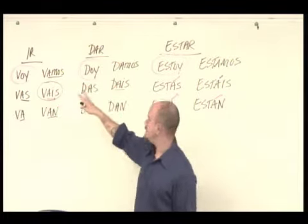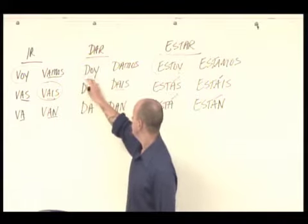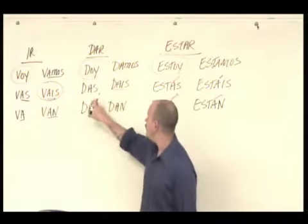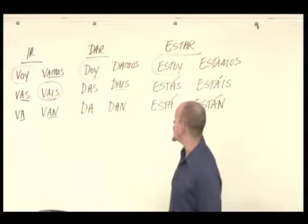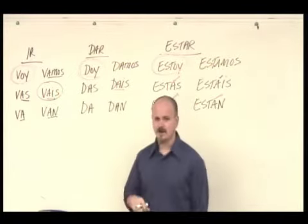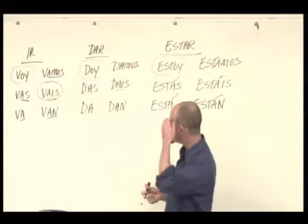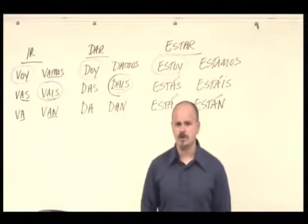Once we've learned that, the other should be easy, because dar, you're going to see, is almost exactly the same. We have, again, this oy ending. So, doy and das, da, damos, dais, and dan. So, basically, exactly the same as ir, except instead of V's, we have D's. So, this should not be very hard to remember. Once again, no accent in the vosotros form.